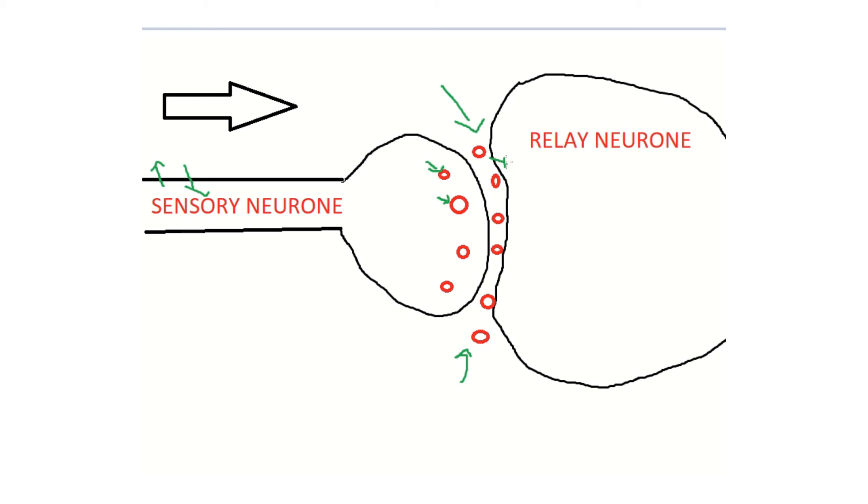And they attach themselves to the relay neuron here, and that will then start a new signal here in the relay neuron, transferring the nerve signal. The smart thing about this is this makes sure that the nerve signal can only run one way. It's not like it can run back. So in this case here, the nerve signal can only run this way, it can't run back, because the synapses here they work like a kind of one-way gate to make sure the signal only goes one way.